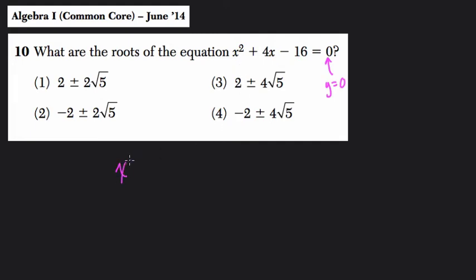So let's set this up: x² + 4x - 16 = 0. A typical first strategy would be to look for factors of negative 16 that add to positive 4, but they don't exist.